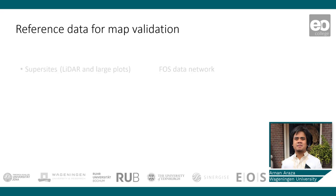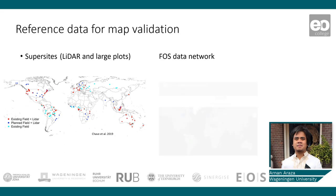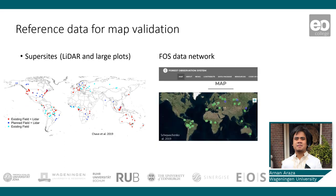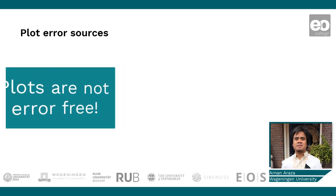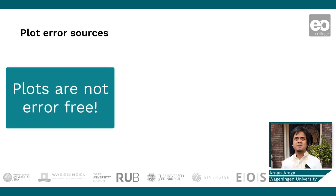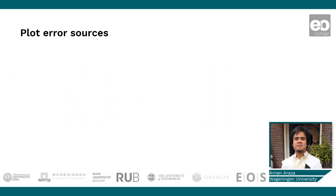The reference data used for validation are usually field estimates of AGB from forest inventories and airborne LiDAR, accessible in data portals like these examples. However, these reference data are not error-free, and their uncertainties coming from measurement error, for example, should be accounted for prior to comparison with map estimates.